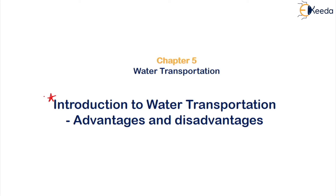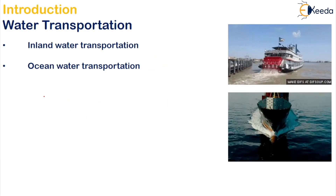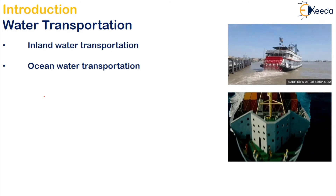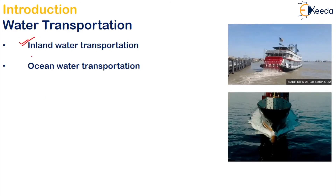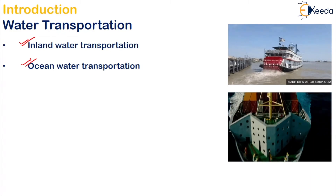On the contrary, two thirds of the entire world surface is covered by water, which proves the importance of waterways or water transportation. Water transportation is divided into two categories: one is inland water transportation and the other is ocean water transportation.